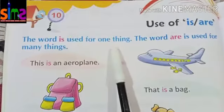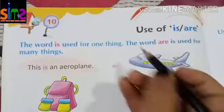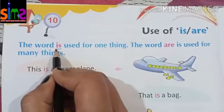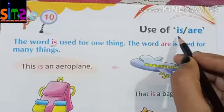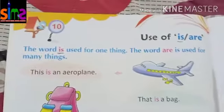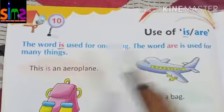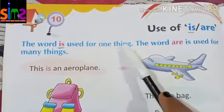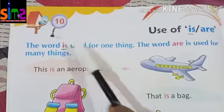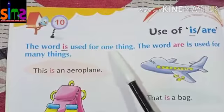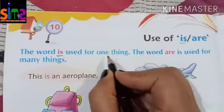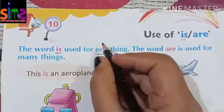The word 'is' is used for one thing. The word 'is' is used for only one thing.